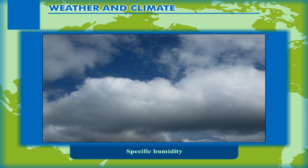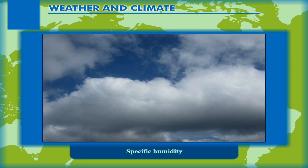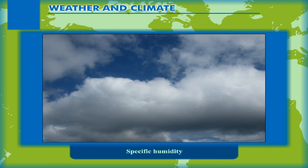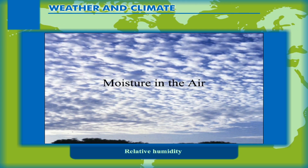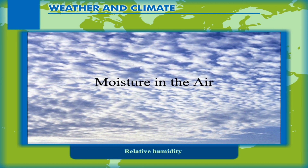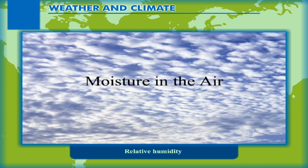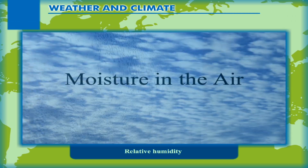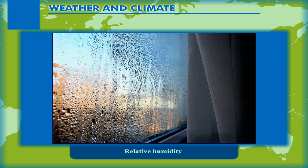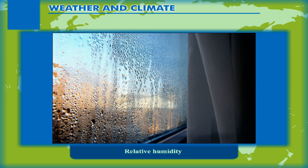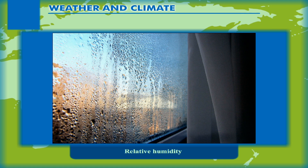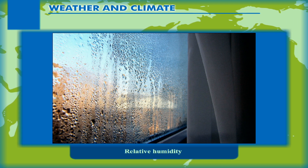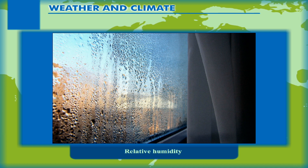Specific humidity is the weight of water vapor in grams contained per unit weight of air given in kilograms — that is, the mass of water vapor present in the total mass of air. Relative humidity is the ratio of the actual amount of moisture present in the air to the maximum amount of moisture that the air can hold in a definite volume of air at a given temperature. It is expressed in percentage. When the relative humidity is 100%, or the actual amount of moisture is equal to the moisture-carrying capacity of air, it is the condition when air is saturated. The temperature at which the air gets saturated is referred to as the dew point.